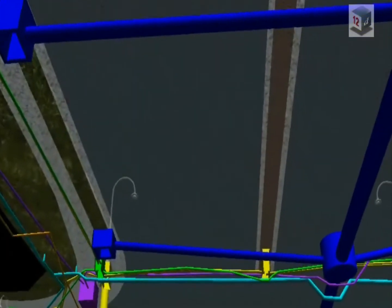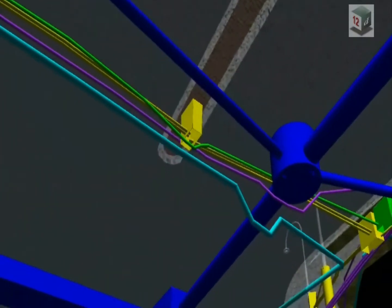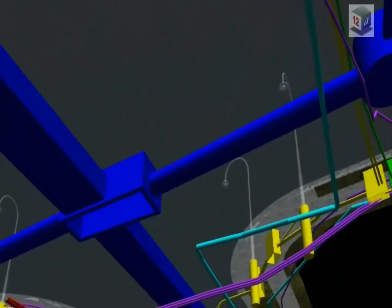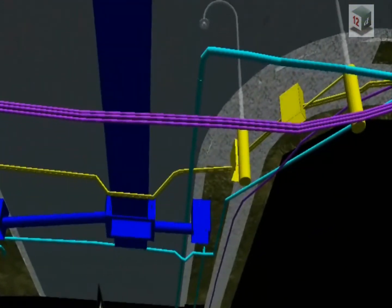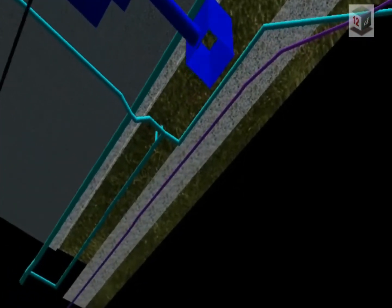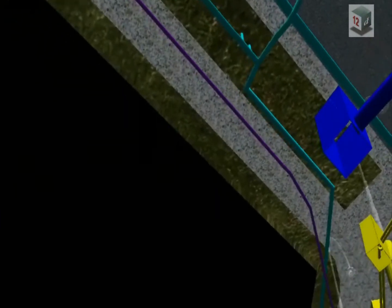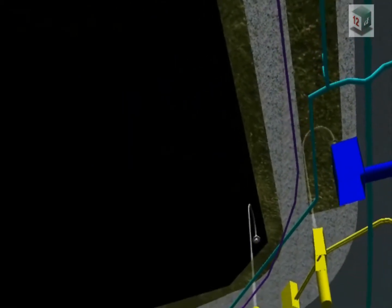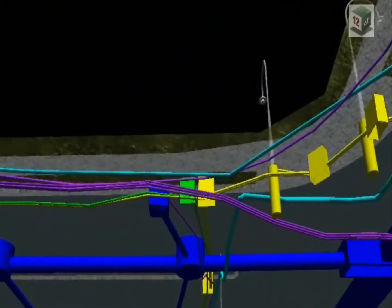In this view of the intersection at Central Street, you can see why the installation of relocated and newly installed underground utilities is such a high cost and time component of major urban highway construction. With this amount of congestion, you can see what sort of problems this would cause if you never had an accurate record of their location and level of detail.